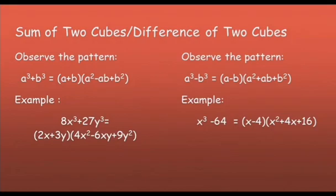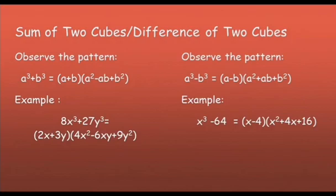Example: x cubed minus 64. The cube root of x cubed is x, and the cube root of 64 is 4. So the first factor is x minus 4. To get the second factor, square x to get x squared. The middle term is 4 times x equals 4x, and this middle term is positive. Then square 4 to get 16.